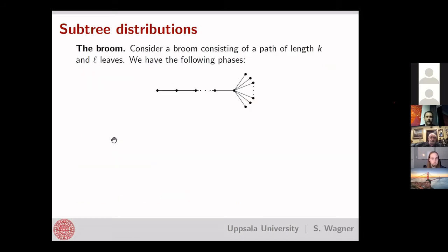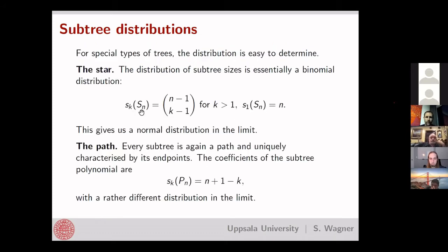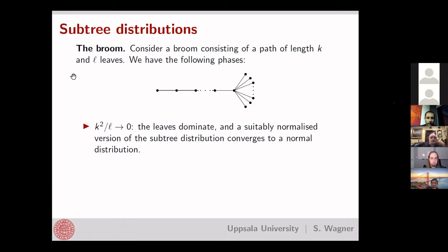By mixing paths and stars, one can generate many interesting distributions. One such example is the broom: take a long path of length k and attach L leaves at one end. The behavior depends on how k and L relate as they grow large. If k² / L goes to zero — meaning sufficiently many leaves — the leaves dominate and, after normalizing by subtracting the mean and dividing by the standard deviation, the distribution converges to normal.